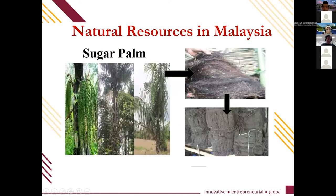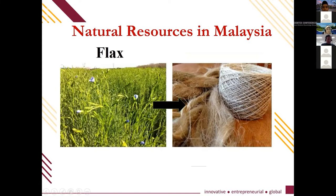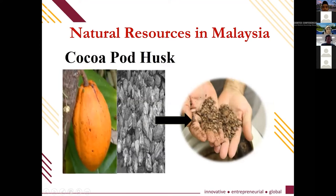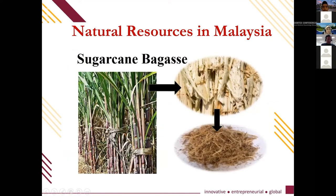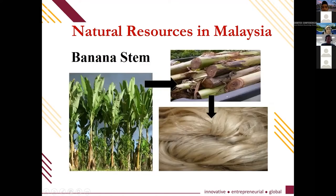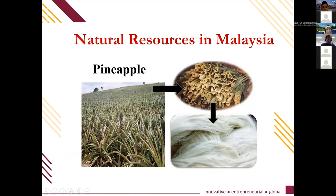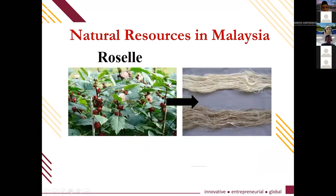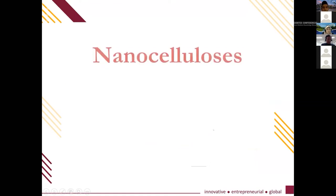Some of the natural resources in Malaysia include sugar palm, flax, hemp, coconut husk, cocoa pod husk, betel nut, sugarcane bagasse, banana stem, pineapple — mostly located in south Malaysia — oil palm (Malaysia is the second largest oil palm producer in the world), and roselle, mostly cultivated in the south part of Malaysia.